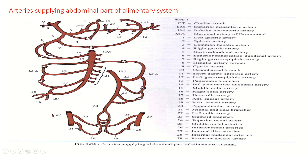Let us identify all these branches. This is the celiac trunk; you can see this is the left gastric artery and its esophageal branch. This is the tortuous splenic artery, the posterior gastric artery, and these are the pancreatic branches. You can see the short gastric arteries and the splenic artery proper. Here you can see the common hepatic artery, the right gastric artery, the gastroduodenal artery, the hepatic artery proper, and the cystic artery. The gastroduodenal artery gives the right gastro-omental artery and the superior pancreaticoduodenal artery, which divides into anterior and posterior branches.